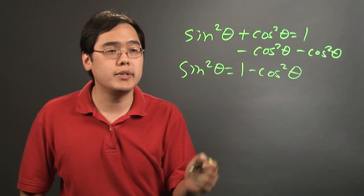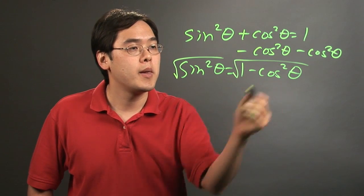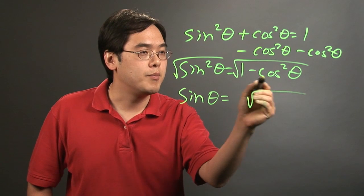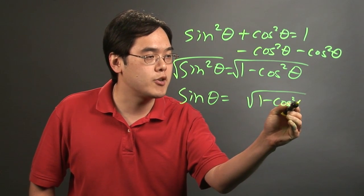And then to solve for sine completely, because sine is squared, you take the square root of both sides. So you have sine theta equals... Now because the two terms are subtracted by each other, you really can't do too much with it algebraically.